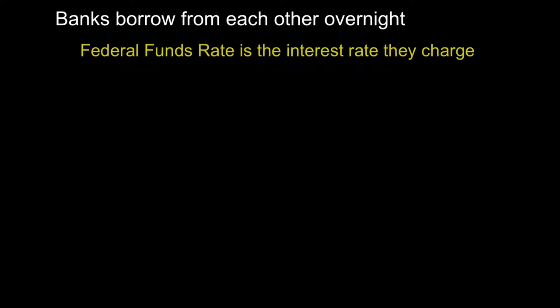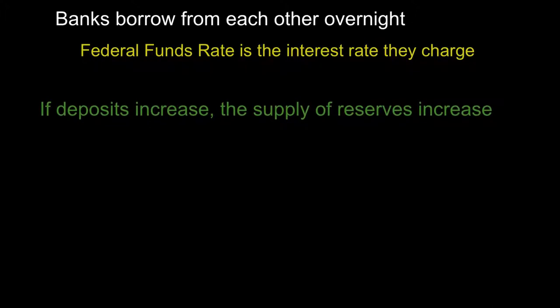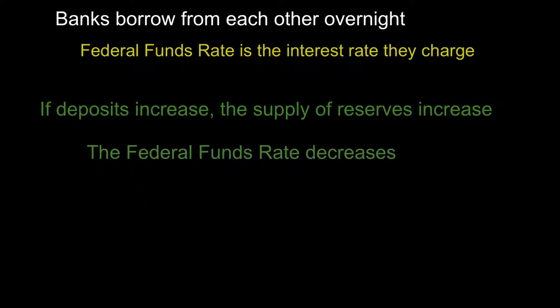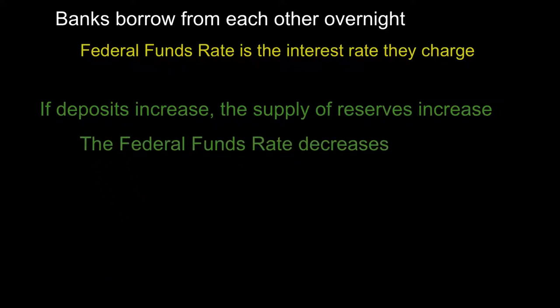If the three tools do something to increase deposits, the supply of reserves increases. With more reserves on hand, when banks call each other at night to get reserves, they'll be quoted a lower rate because supply has increased — so the federal funds rate they charge each other will decrease. Importantly, all other interest rates are essentially based off the federal funds rate, so by affecting reserves, the Fed affects all interest rates.